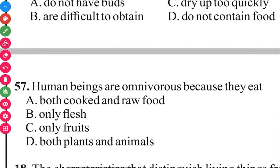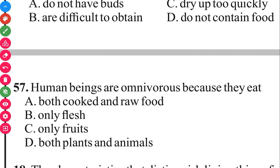Question 57. Human beings are omnivorous because they eat both plants and animals. The answer in 3, 2, 1 is D, both plants and animals.